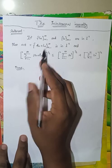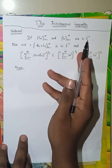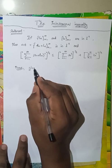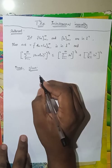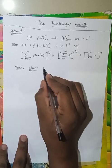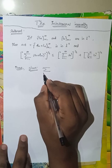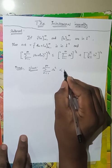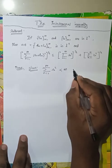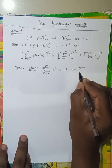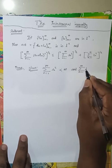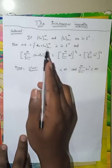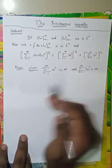Let's start. Given that {Sn} and {Tn} are in L2 sequences. What does that mean? Since {Sn} and {Tn} are in L2, the summation from n=1 to infinity of Sn² is convergent, and the summation from n=1 to infinity of Tn² is also convergent. This sequence is in L2, so this is the condition.